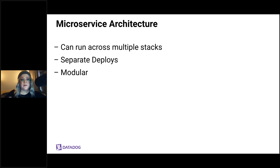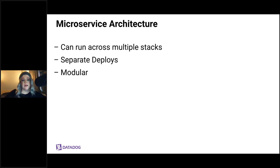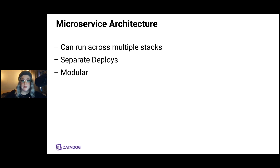An improvement on traditional architecture is a microservices environment, where everything is separate and relates to a specific feature. You can mix technologies by choosing suitable programming languages and frameworks for each service, with better scalability — each service can be scaled independently according to its traffic and deployed separately.